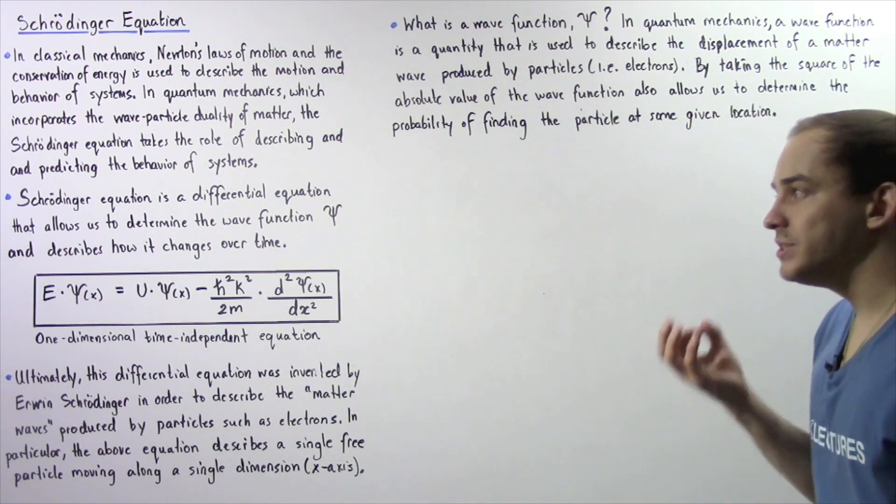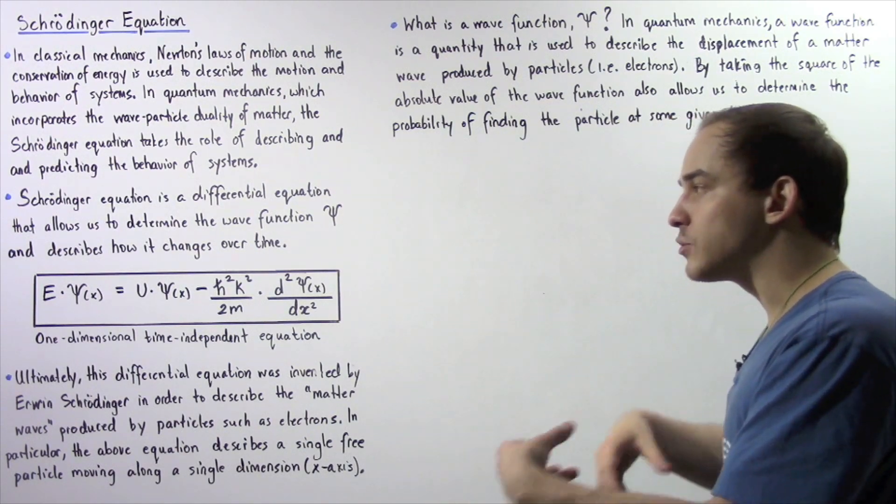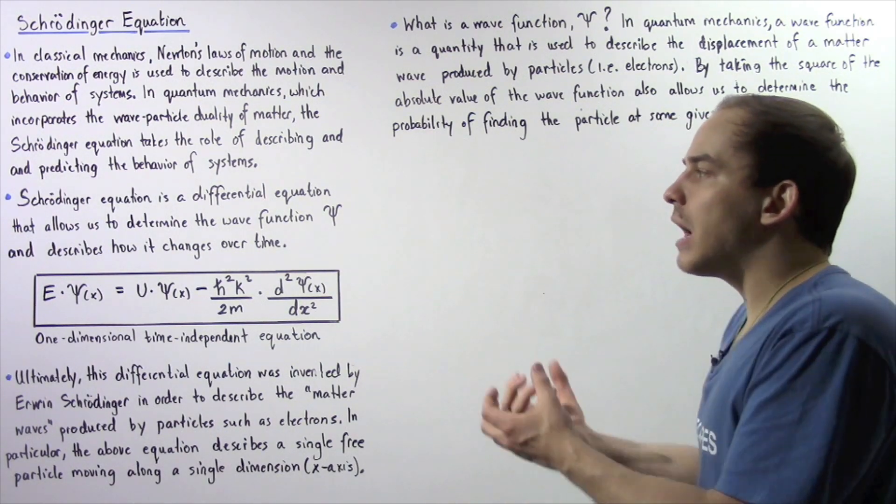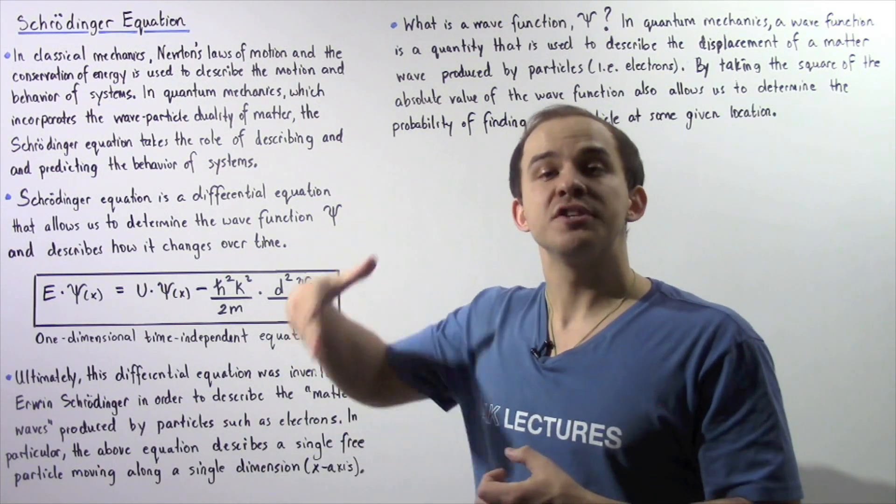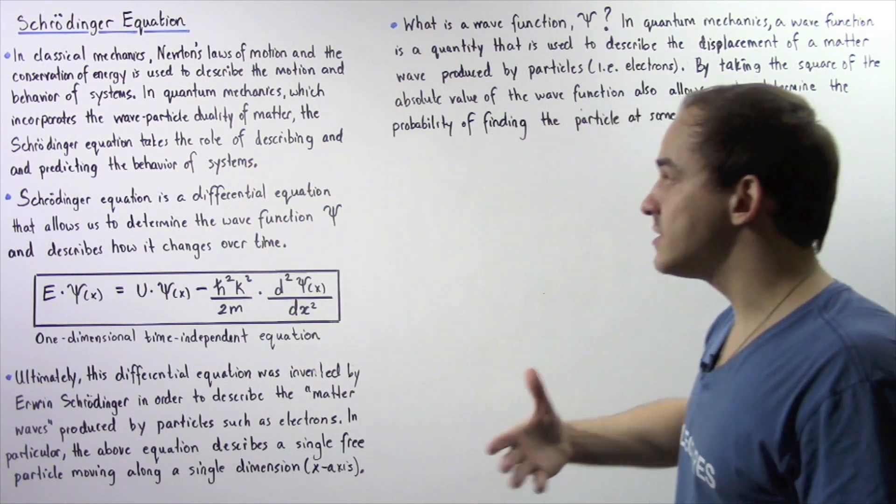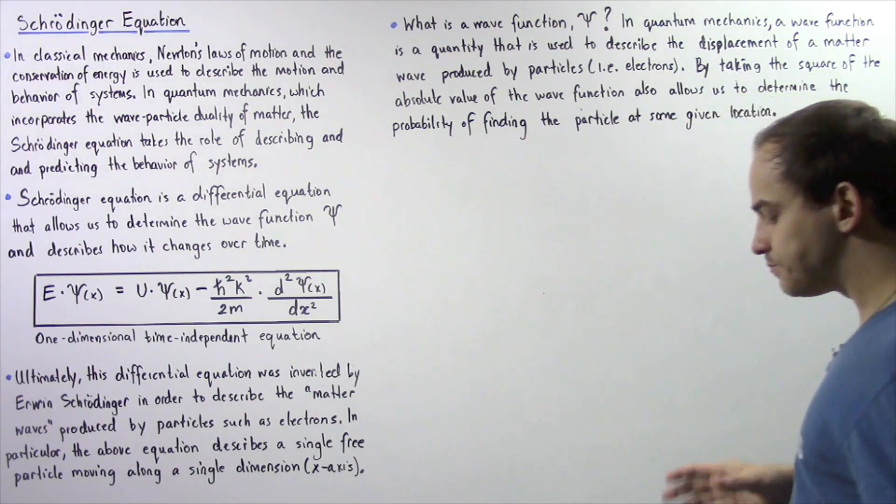So basically, we cannot actually predict the exact location of an electron. But rather, we can use probability to predict where our electron might be found with some high probability. And this is exactly what the wave function allows us to do.